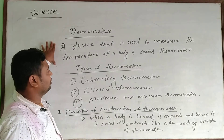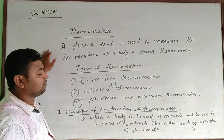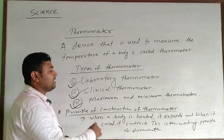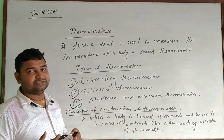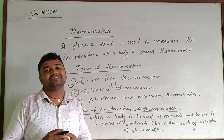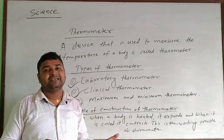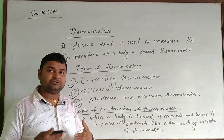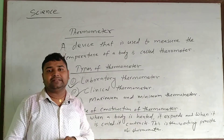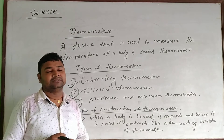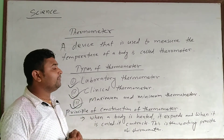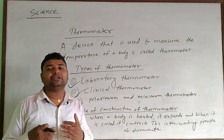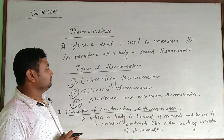Generally there are three types of thermometers we use: one is the laboratory thermometer, one is the clinical thermometer, and another is the minimum and maximum thermometer. In the laboratory thermometer, alcohol is mainly used. In the clinical thermometer, mercury is especially used. In the minimum and maximum thermometer, both alcohol as well as mercury are used.